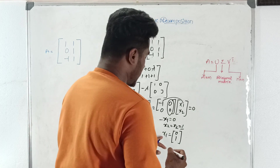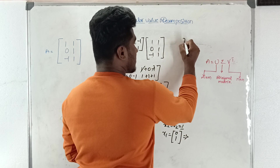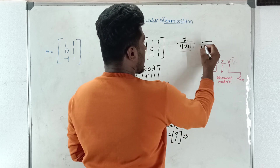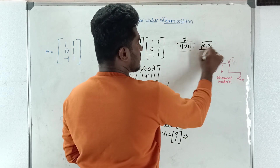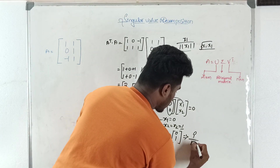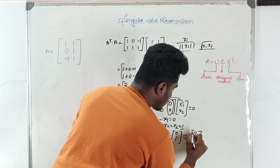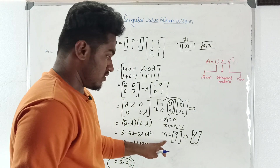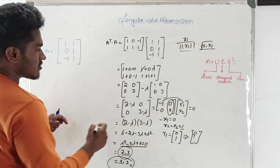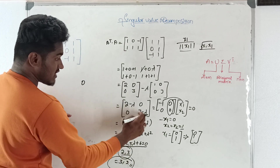We normalize this eigenvector using x1 / |x1|. The modulus is the square root of 0² + 1² = 1, so the normalized first eigenvector remains [0, 1]. For the second eigenvalue λ = 2: (2-2) = 0 and (3-2) = 1, giving matrix [0, 0; 0, 1].